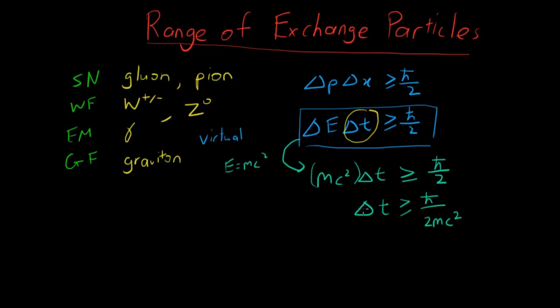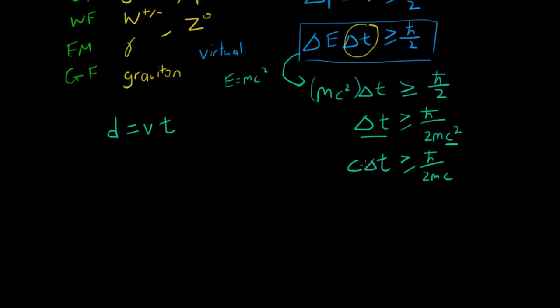But this tells the time. What if you want to know the range? We prefer to know about the range because it gives us more information about the particle. We know that range is basically just distance, and distance is velocity times time. So we have c·Δt ≥ ℏ/(2mc). Now that we know c·Δt is just range, let's say R. So the range of the particle is equal to ℏ/(2mc).